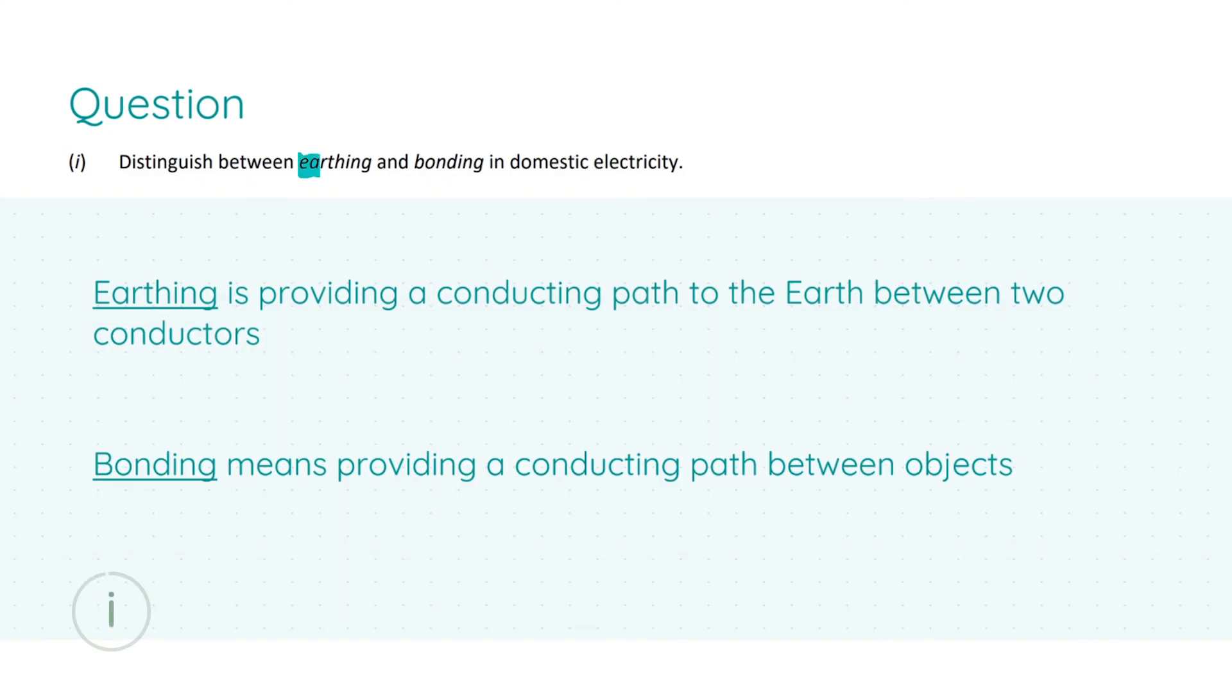Part i: we are asked to distinguish between earthing and bonding in domestic electricity. The definitions are as follows. Earthing is providing a conducting path to the earth between two conductors, the other conductor being the earth itself. Bonding means providing a conducting path between objects, one of which is not the earth. Your first correct statement gets you four marks. The second correct statement gets you three marks.